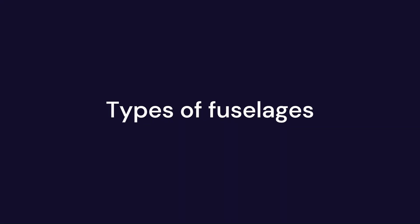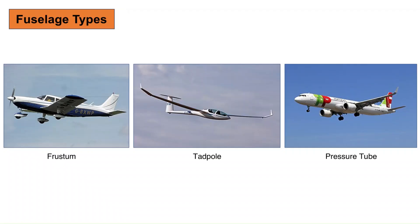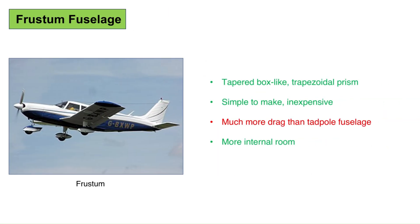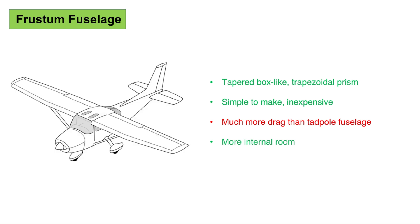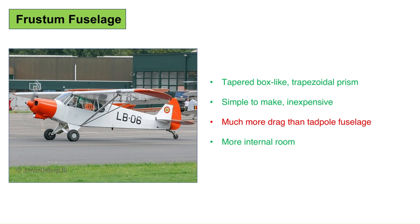Now let's look at the three types of fuselages and their pros and cons. Frustum fuselage — it is a tapered box-like fuselage which resembles a trapezoidal prism. In geometric terms, a frustum is the portion of a solid, such as a cone or pyramid, that lies between two parallel planes cutting the solid, resulting in a truncated, tapered shape. This type is relatively simple to make and is inexpensive. Its drawback is that it generates far more drag compared to a tadpole fuselage. If internal volume is a concern, or an inexpensive but strong fuselage is required, then it is the right choice.